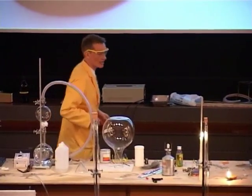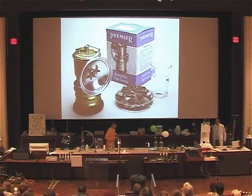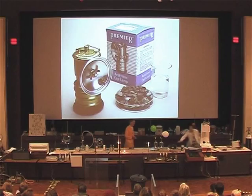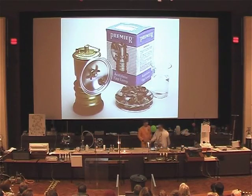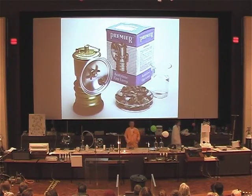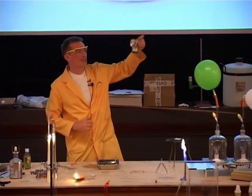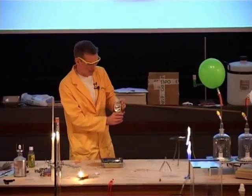Ethine used to be used in portable lamps. This was before the days of batteries and so on. What did you use on your bike? Well, you used to have a little lamp like this. This is an acetylene lamp here.